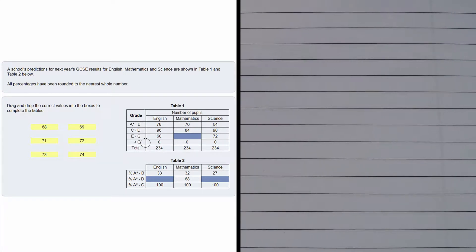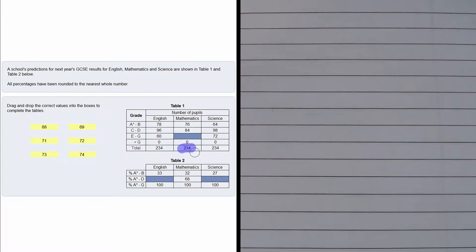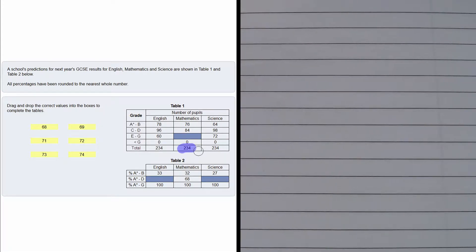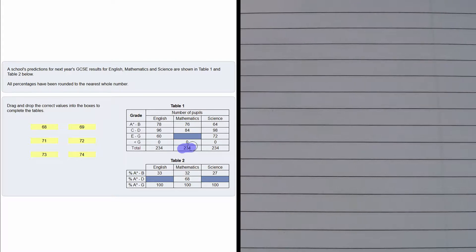The missing box is the mathematics E to G grades. At the bottom, we can see the total is 234 pupils, and we know zero pupils got less than a G.